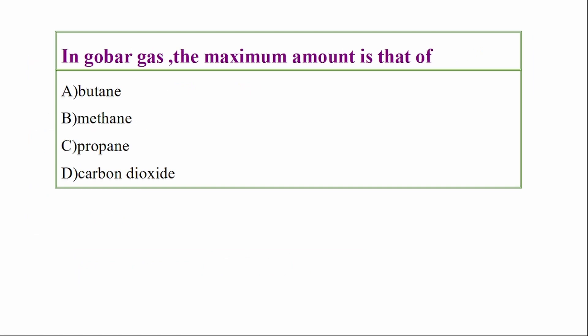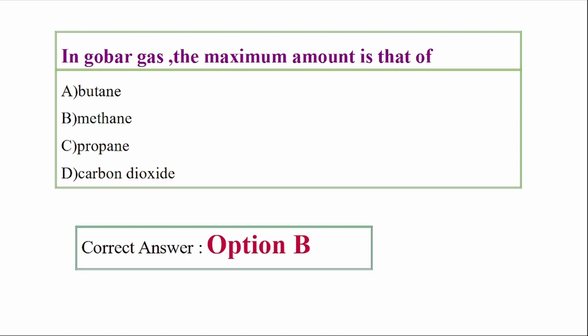In gobar gas, the maximum amount is that of? Options: butane, methane, propane, carbon dioxide. Answer option B: methane.